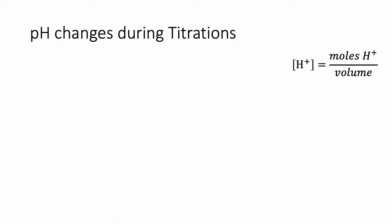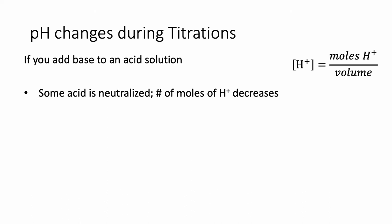For purposes of this video, I am talking about adding base to an acid solution. You don't have to titrate that way — you could also add acid to a base solution, and we will talk later about how that would work in terms of calculation. When you have an acid solution, you start with some number of moles of H+. But as you add base, some of that acid is going to be neutralized. The H+ will react with the OH- in the base to form water.